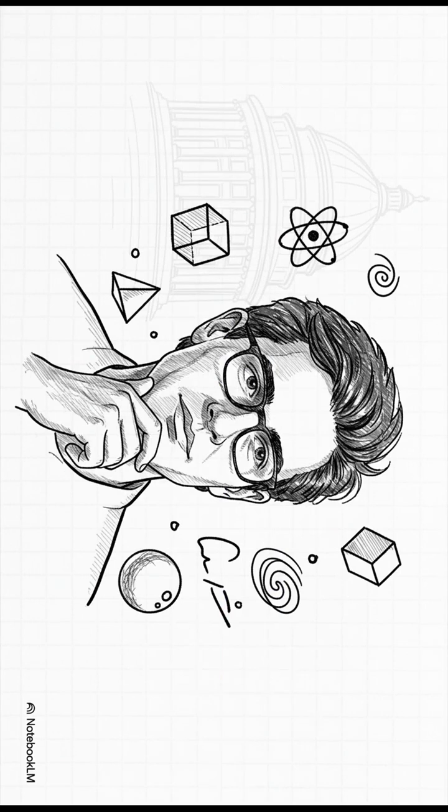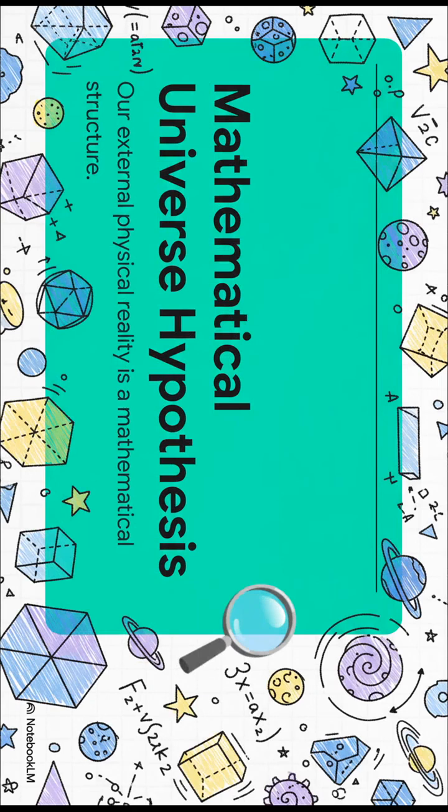The person who brought this idea into modern science is MIT physicist Max Tegmark. He calls it the Mathematical Universe Hypothesis, and it's an idea that could change everything.